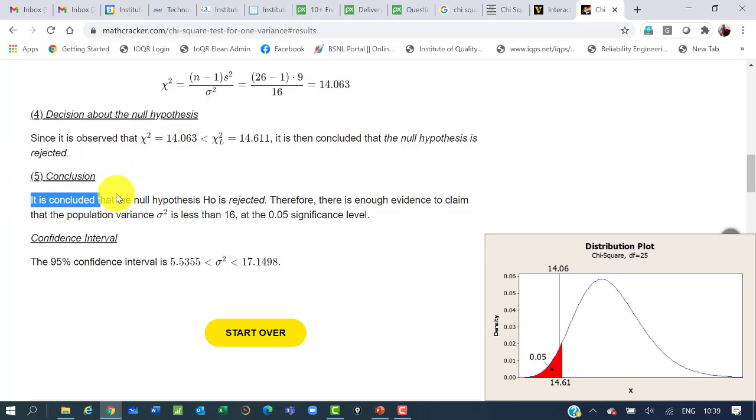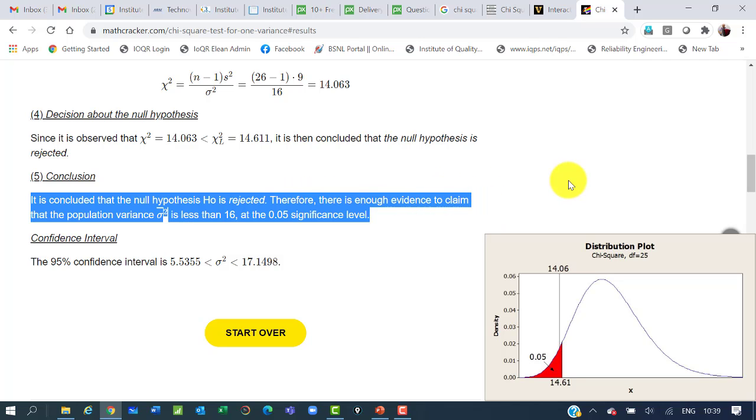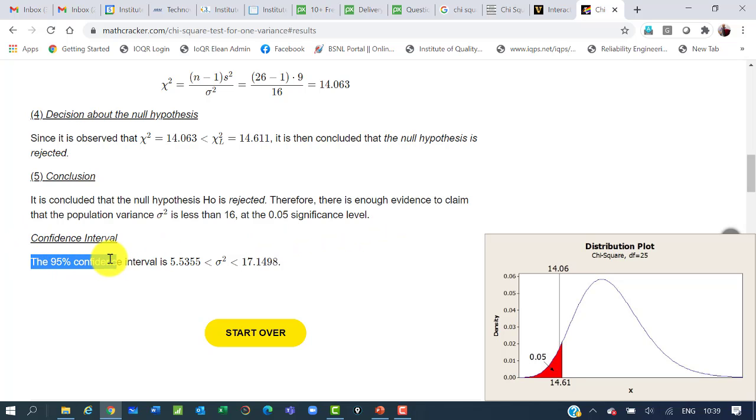Conclusion. It is concluded that null hypothesis H₀ is rejected. Therefore, there is enough evidence to claim that population variance σ² is less than 16 at 0.05 significance level. The confidence level that we had chosen was 95 percent.